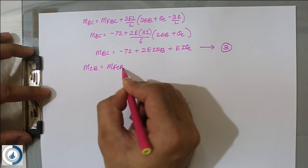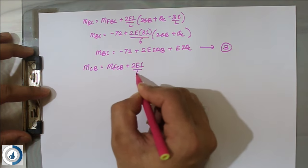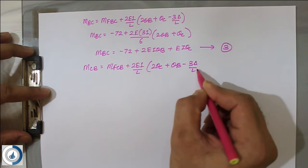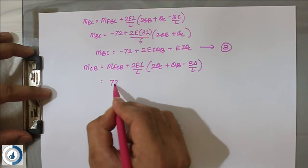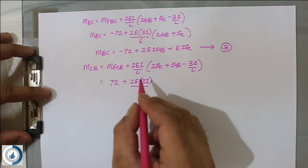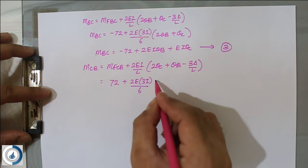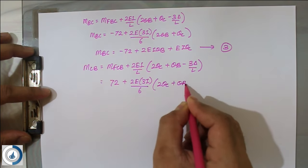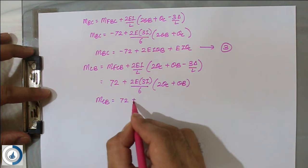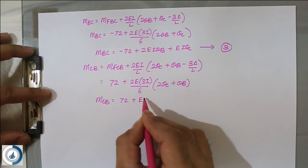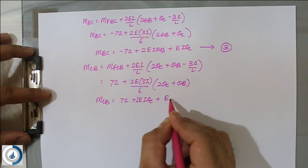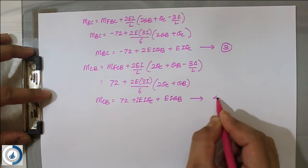For MCB: MCB = MFCB + (2E·3I/6)(2θC + θB) with δ = 0. Substituting: MCB = 72 + 2EI·θC + EI·θB. This is equation number 4. With all four moment equations established, we now check equilibrium conditions.